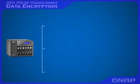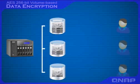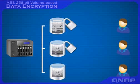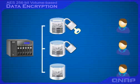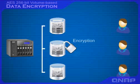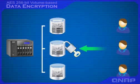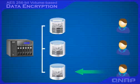The TS-639 PRO supports AES-256 volume-based encryption. Disk data are protected by an encryption key. To access the encrypted disk, you need to unlock it with an encryption password or encryption key, so you don't have to worry about data exposure if the hard drive or NAS is stolen. The encryption key can be saved on the NAS to unlock the encrypted disk automatically during system startup. You can also choose not to encrypt the disk volume.